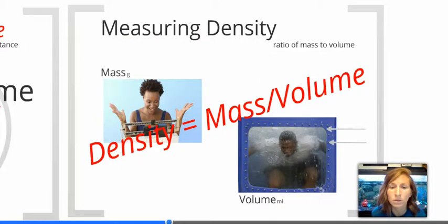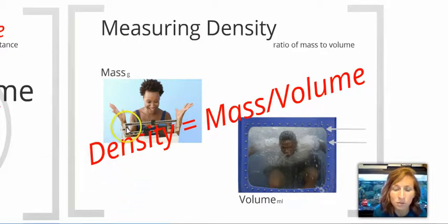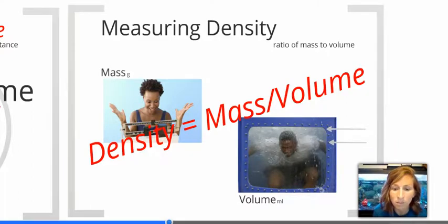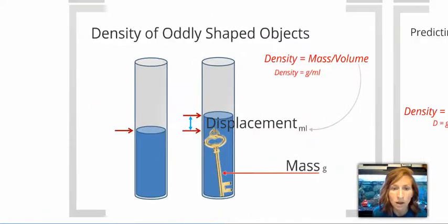So, how do we measure those variables that allow us to get density? Well, for mass, we can take something like a triple beam balance or the electric scales that we used in class to get the mass of the object. And then volume, we can usually measure in a beaker of some sort. And there are also other techniques like using a graduated cylinder, and there's something called volume displacement that we're going to talk about if we're dealing with irregular objects.